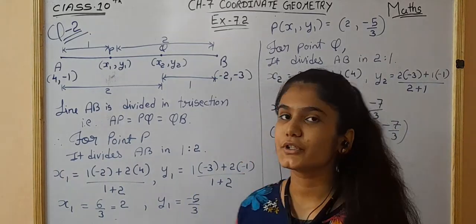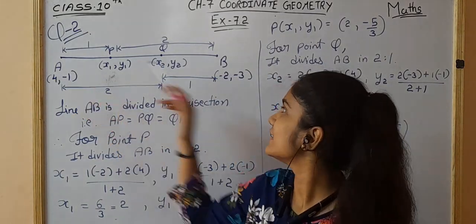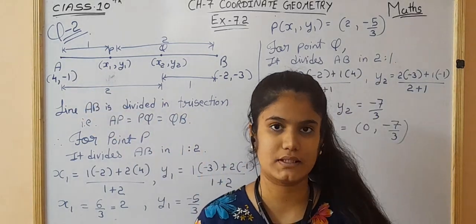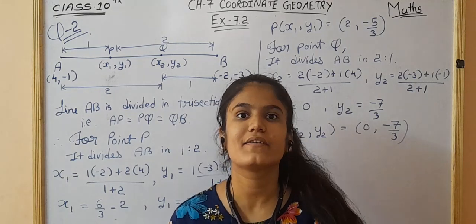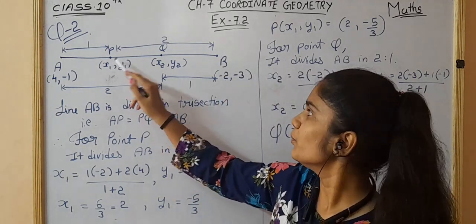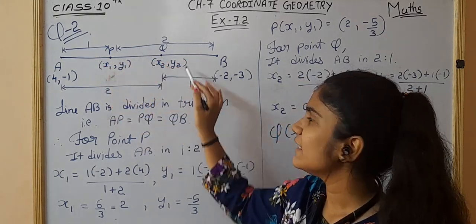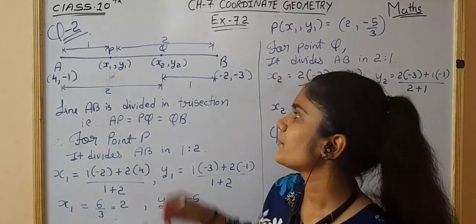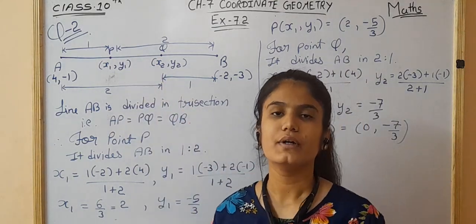In Question 2, we are given two points A and B with coordinates (4, -1) and (-2, -3). The line segment is divided into trisection, so there will be 2 more points, P and Q, dividing the line into 3 equal parts. We suppose the coordinates of P are x1, y1 and Q are x2, y2.